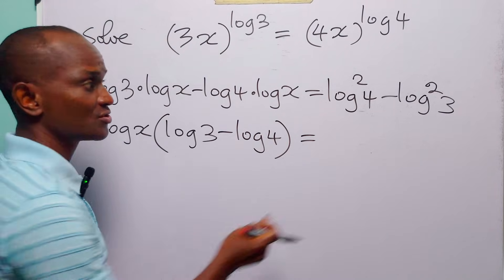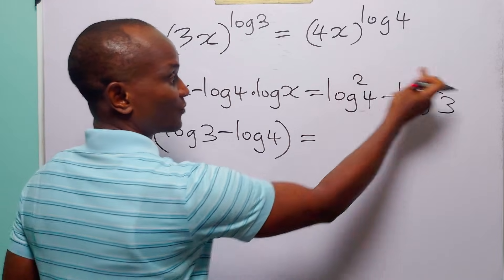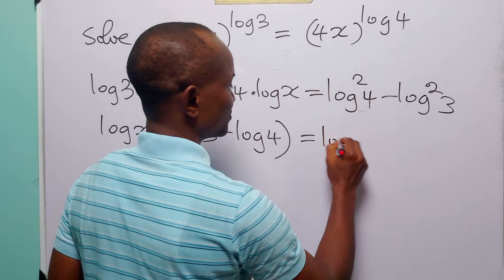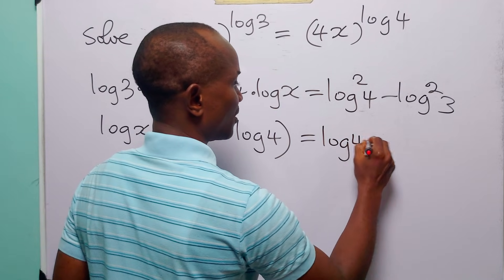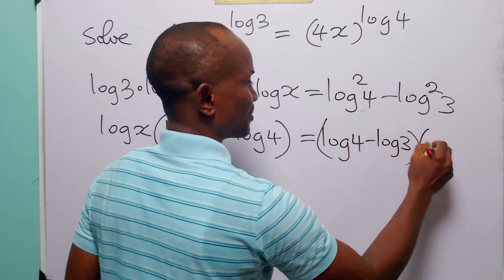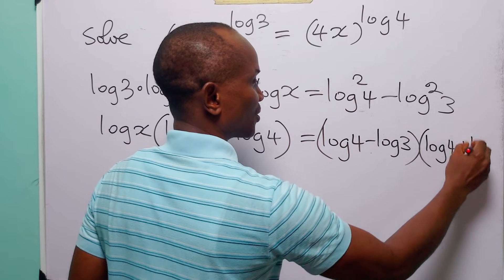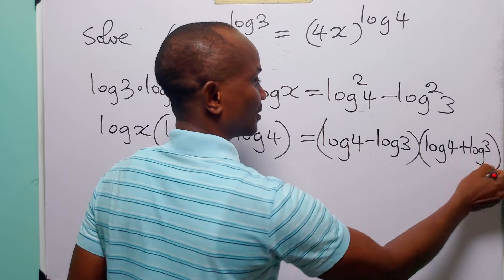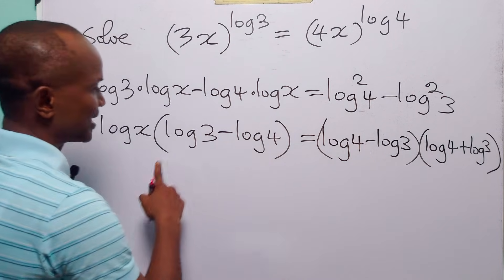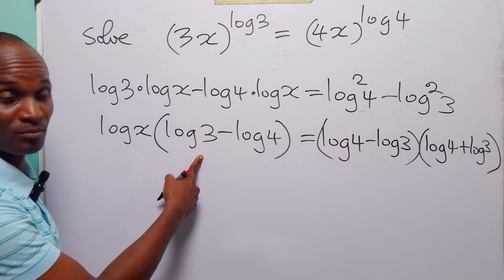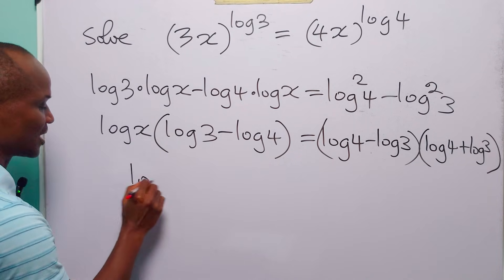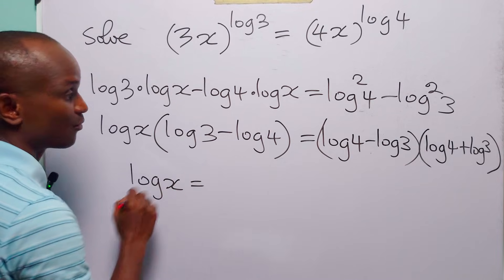On the right-hand side, we have the difference of two squares. We factorize it as (log 4 minus log 3) multiplied by (log 4 plus log 3). We now divide both sides of this equation by (log 3 minus log 4) so that we can find log x.